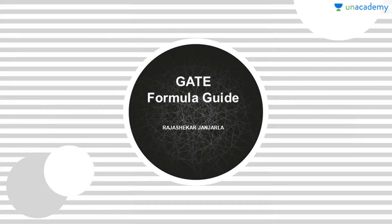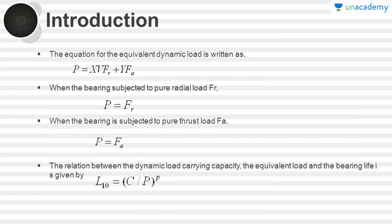Let's recall the formulas in the design of rolling contact bearings. The equation for the equivalent dynamic load is written as P equals X into V·FR plus Y·FA, where X and Y are the radial and thrust factors, FR is the radial load, FA is the thrust load, and V is the race rotation factor which depends on the rotation of the race with respect to the shaft.